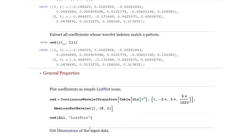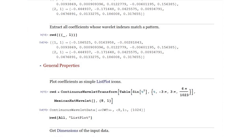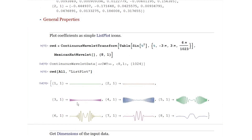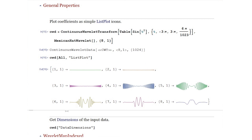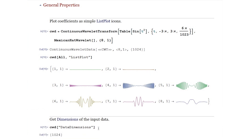Let us consider a continuous wavelet transform of the sine(t²) function over an interval of negative 3π to 3π, using a Mexican hat wavelet with 8 octaves and 1 voice per octave. We perform the continuous wavelet transform and use list plot to visualize all the computed coefficients. Given that the list length is 1024, it's not practical to print all the numbers, so we visualize using a list plot. You can get the dimension of the input data using the DataDimension property, which comes out as 1024.